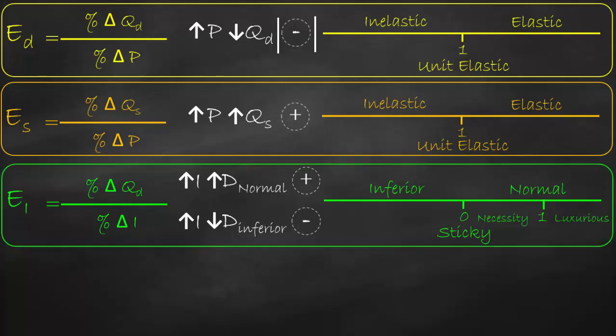Another factor that shifts demand and supply is the price of related goods, which we differentiate into substitutes and complements. This leads to our next type: cross price elasticity, written as E-xy because it involves two goods. The formula is percent change in quantity demanded of good X divided by percent change in the price of good Y — different from regular price elasticity, which uses the same good's price and quantity.